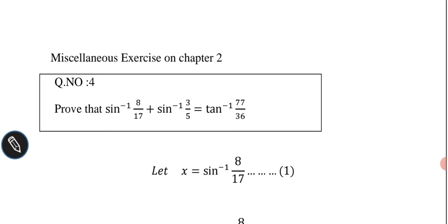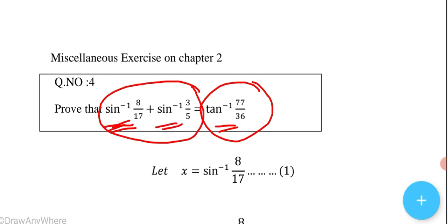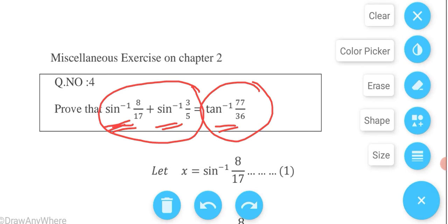Prove that sin⁻¹(8/17) + sin⁻¹(3/5) = tan⁻¹(77/36). On the left hand side we have two functions in terms of sine inverse, but on the right hand side we have only one function in terms of tan inverse. So we are going to convert the sine inverse functions into tan inverse. Let us see how to do it step by step.